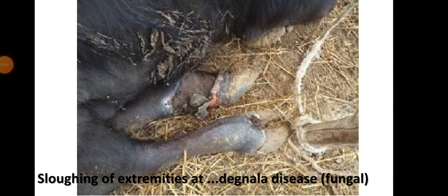Sloughing of extremities is a sign of ergot disease. Ergot is a fungal disease that mostly infects rice cultivation and causes sloughing of extremities — the picture depicts sloughing of a hoof initiated by ergot fungal disease.